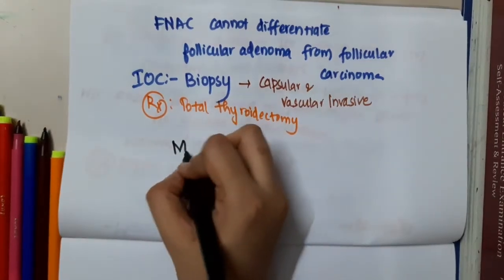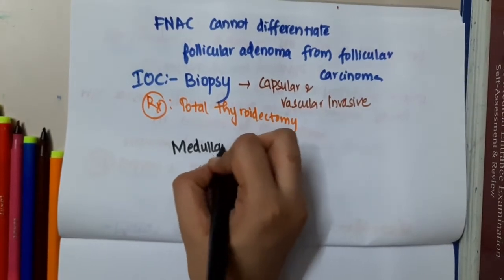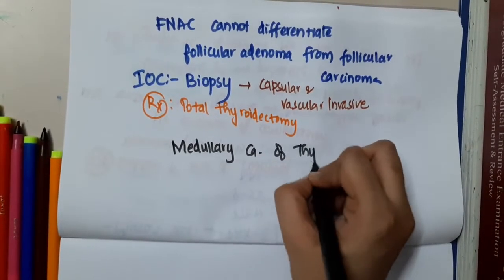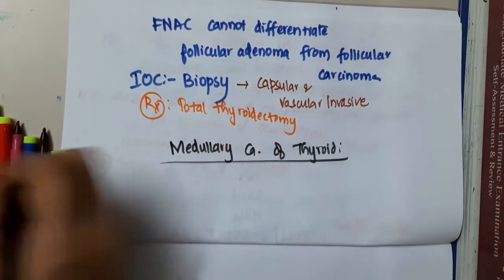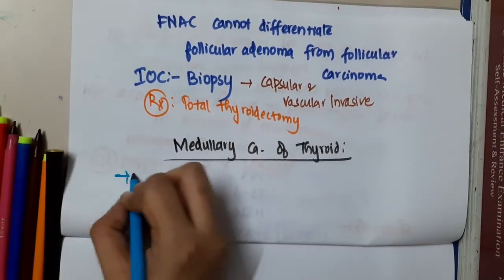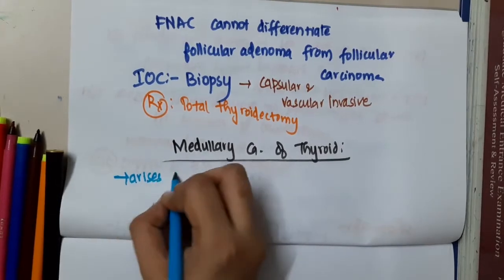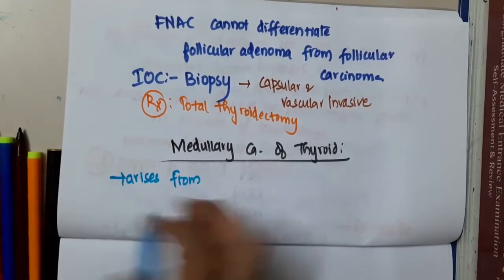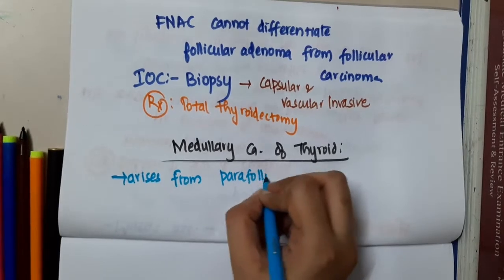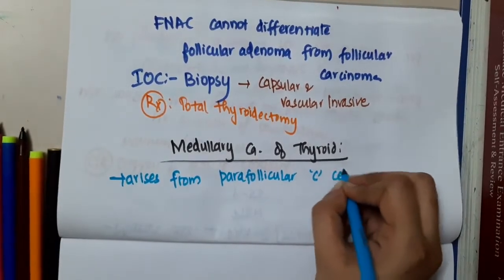Hello friends, let us now learn some important points about medullary carcinoma of thyroid. Medullary carcinoma of thyroid mainly arises from parafollicular C cells.